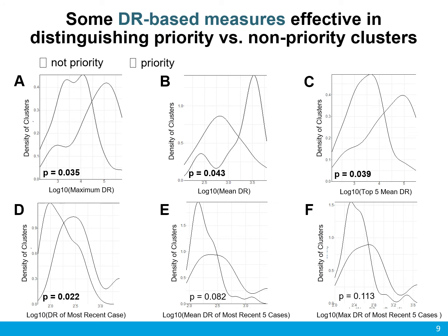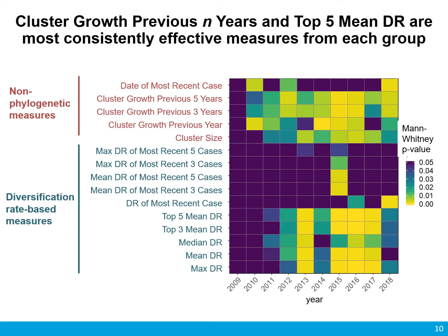Here we see some of the diversification rate-based measures. Four out of the six shown have a significant difference between priority and non-priority clusters, and all of these create two defined peaks between the groups of clusters. This heatmap summarizes the ability of all tested measures to separate priority and non-priority clusters across all ten years. Of these, cluster growth from the previous three or five years and the mean of the top five diversification rates in a cluster are the most consistently effective measures from each group.